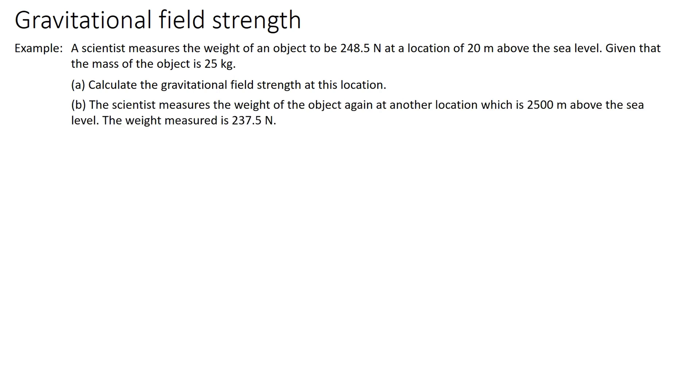The new location is 2500 meters above the sea level. The weight measured is 237.5 Newton. (i) Explain why there is a loss of weight compared to the first measurement. (ii) Calculate the weight of a mass of 30 kilograms at this new location. You can pause the video and try to answer the question.